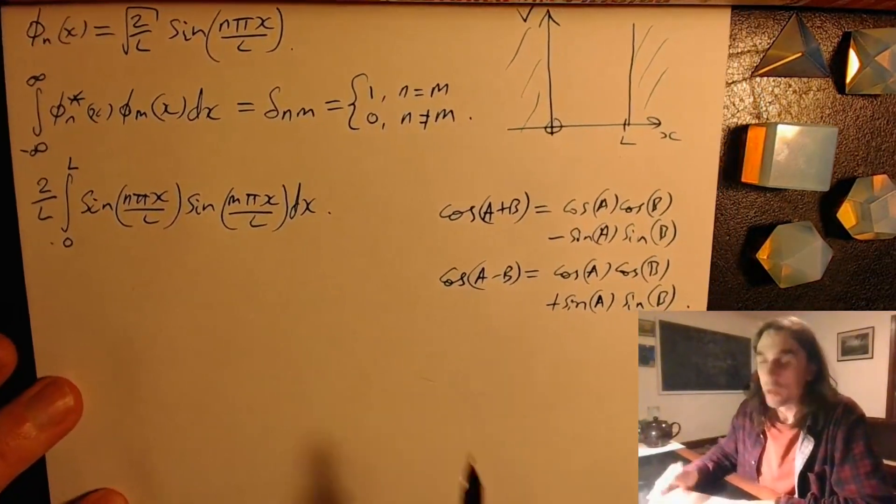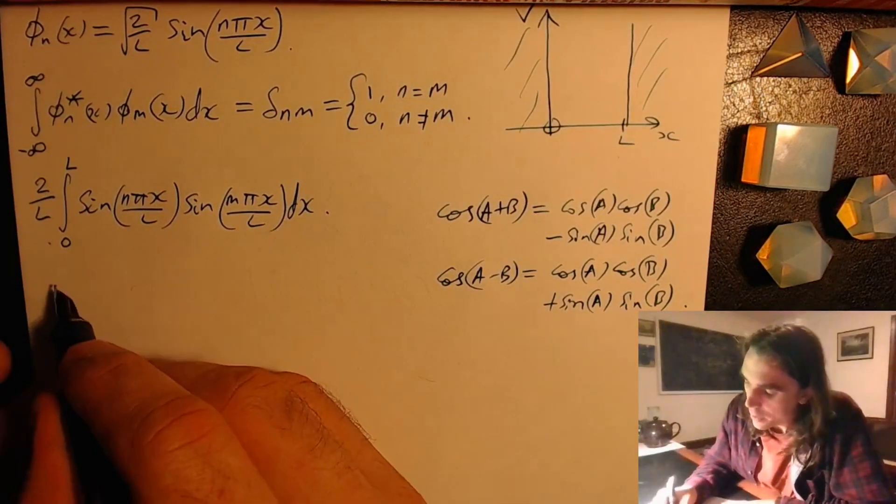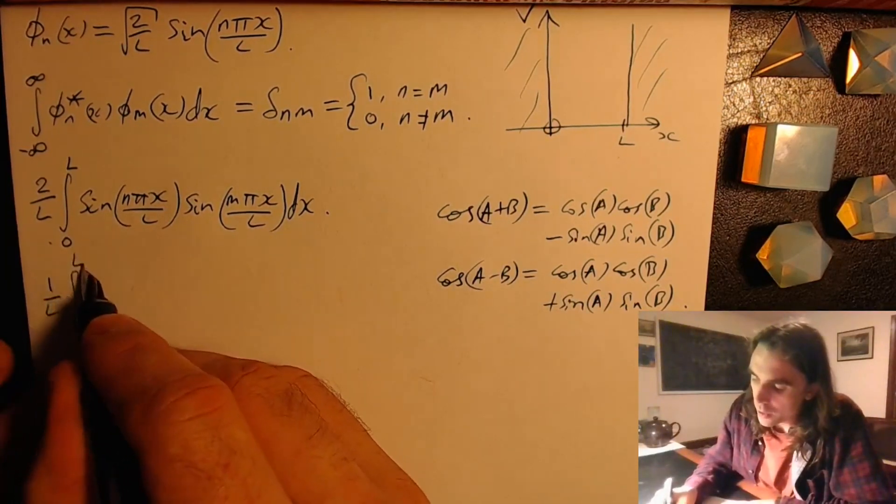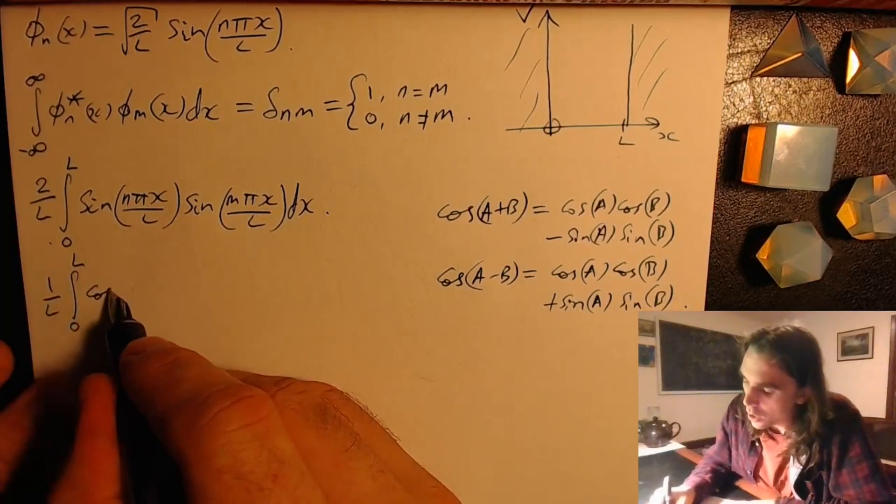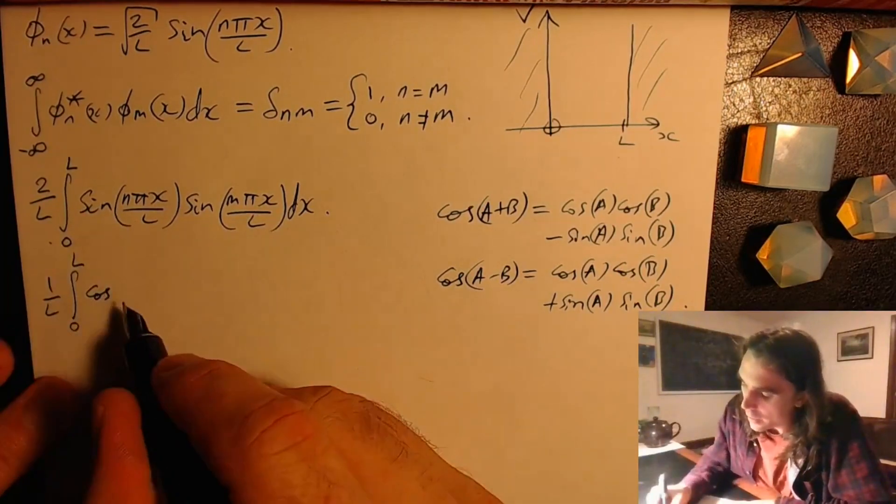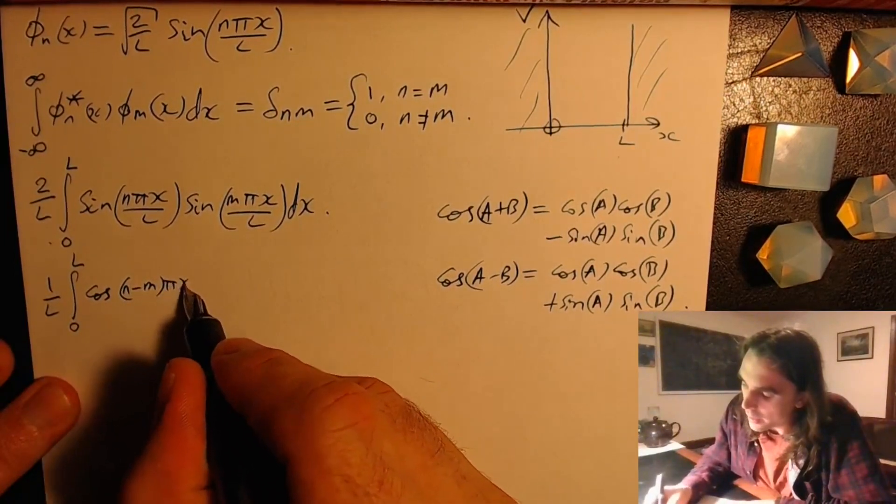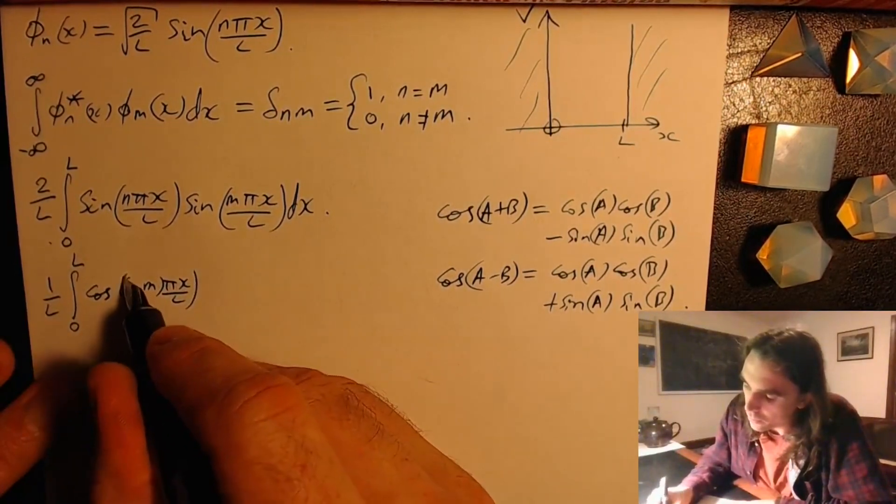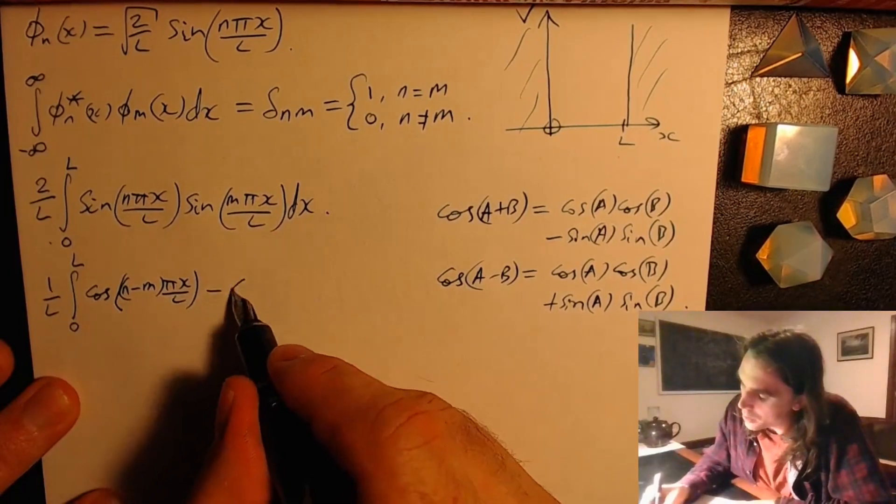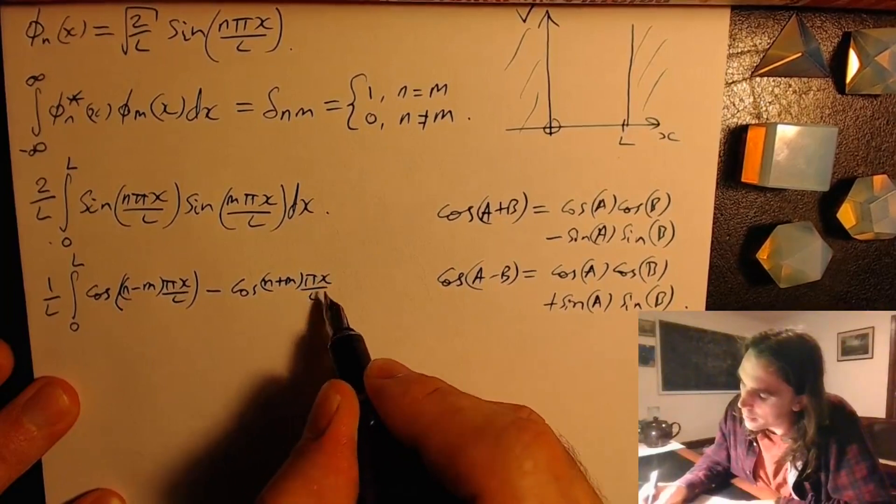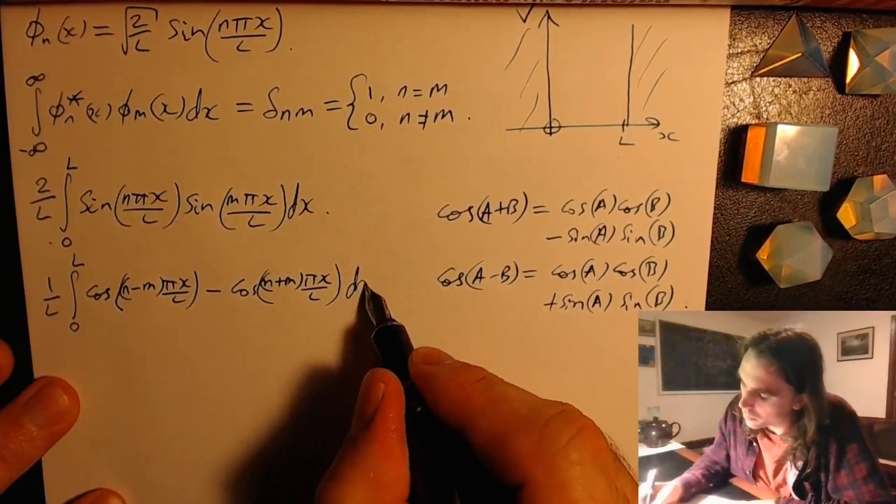And so overall we'll have a factor of 2 that we bring at the front. So we have 1 over L, integral from zero to L, cos of a minus b. So it's n minus m pi x over L, minus cos n plus m pi x over L dx.